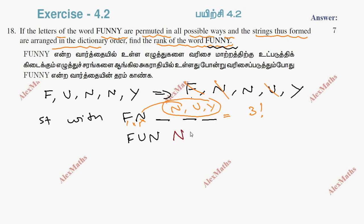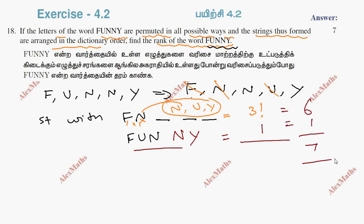We arrange the two remaining elements alphabetically. This gives one option. So 3 factorial is 6, plus 1, giving a total of 7.